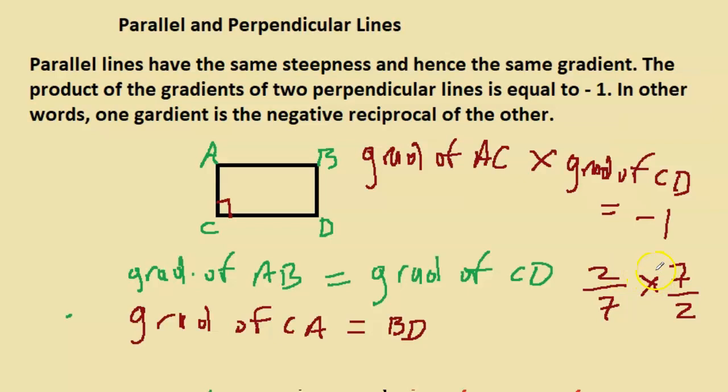But the negative, for me to get negative 1, I have to make one of them negative. So we're saying if two lines are perpendicular, one gradient is a minus reciprocal of the other. The fact that their product is equal to minus 1, and for the product to be minus 1, then one of them has to be the negative reciprocal of the other.